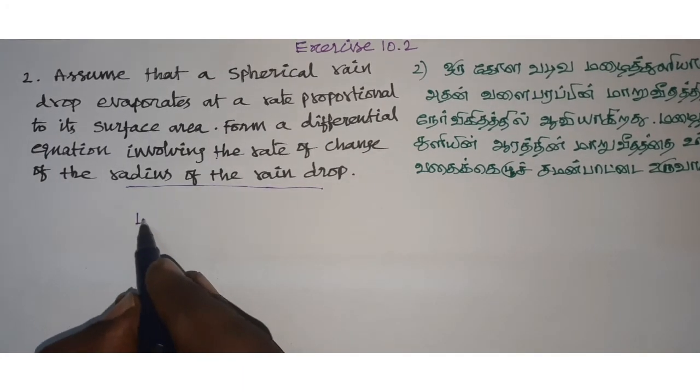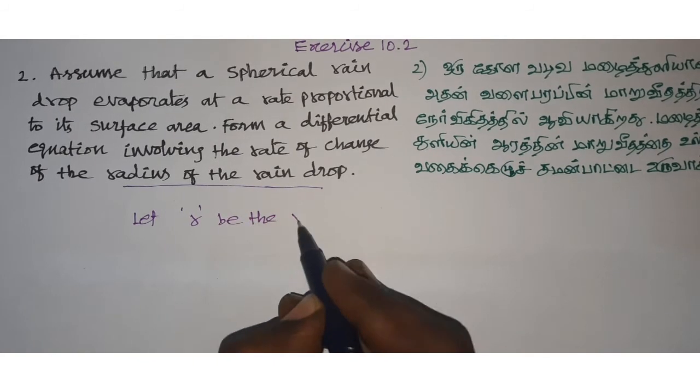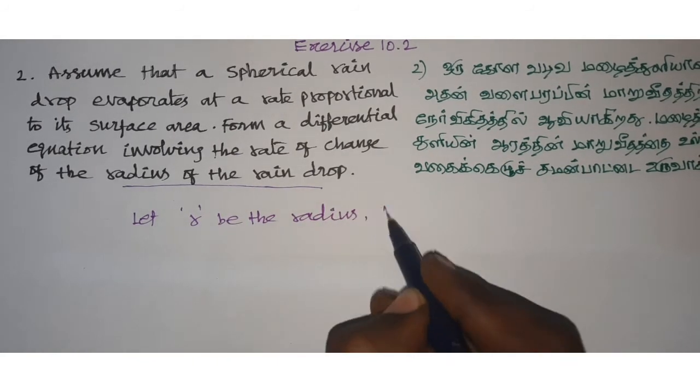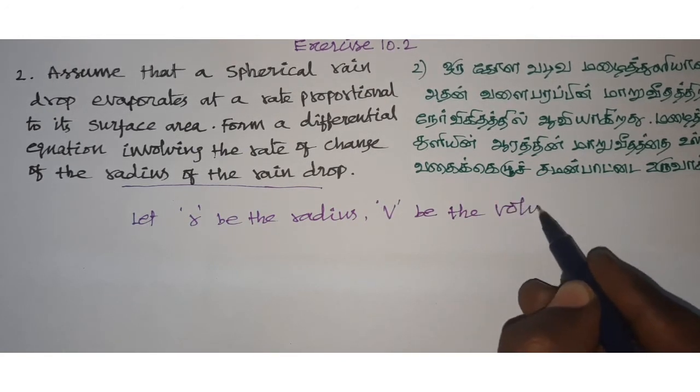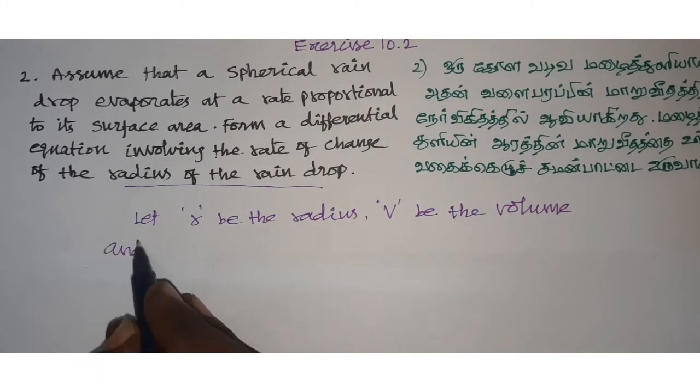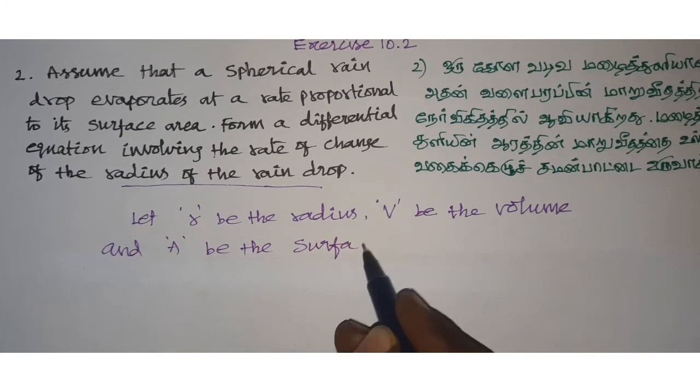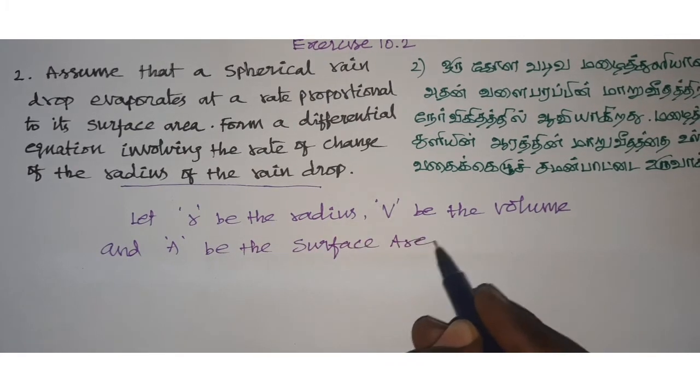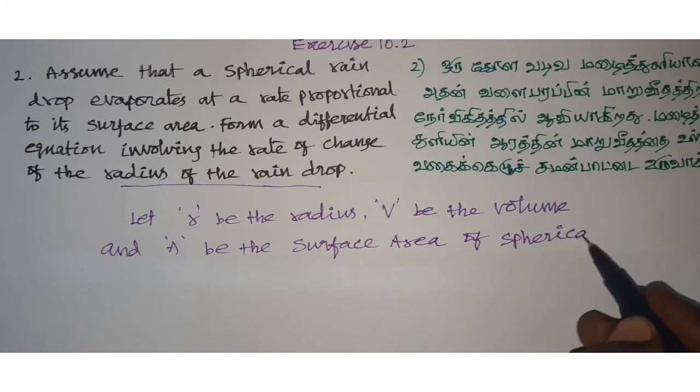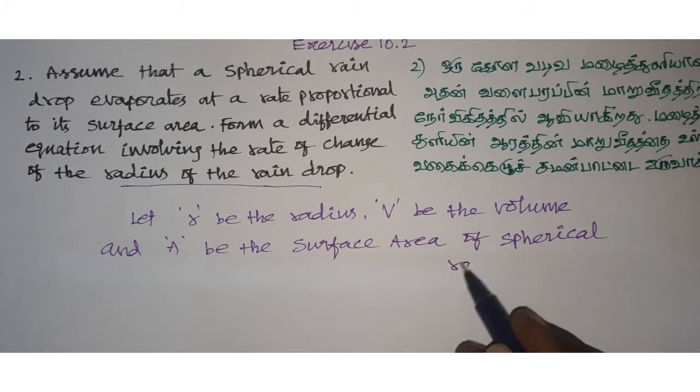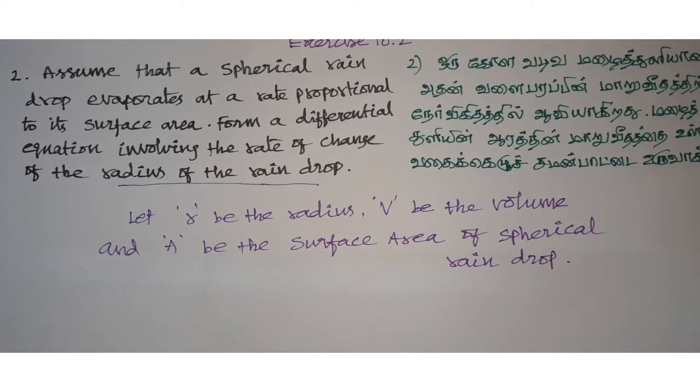So first, let R be the radius, V be the volume, and A be the surface area of spherical raindrop. For a sphere-shaped raindrop, we define radius, volume, and surface area.